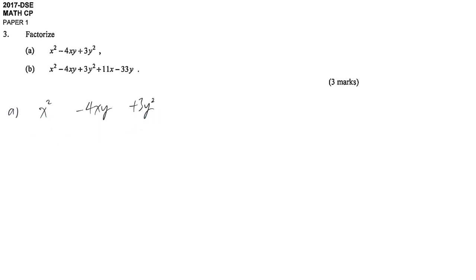Cross factorization. To do this, we focus on the first term and the last term: x squared, positive 3y squared. We have to brainstorm any combination, what times what will give you x squared. This is straightforward, it should be x times x.